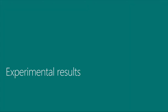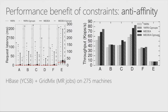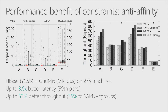Regarding experimental results: for performance benefit using anti-affinity constraints, we used a 275-node cluster with multiple HBase instances, YCSB load generator over a couple of terabytes, and GridMix as background MapReduce jobs. We plot request latency in milliseconds for six different workloads, and throughput. Using Media and placement constraints, we achieve up to 3.9x better latency at the 99th percentile compared to YARN, and 53% better throughput. Even with Cgroups enabled, we still achieve 35% more, so it's beneficial to use both.